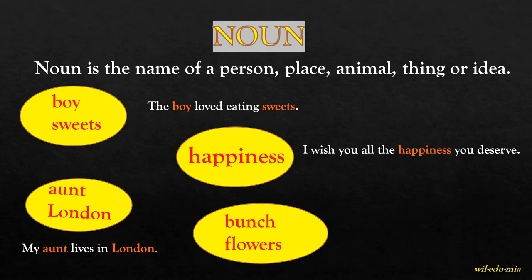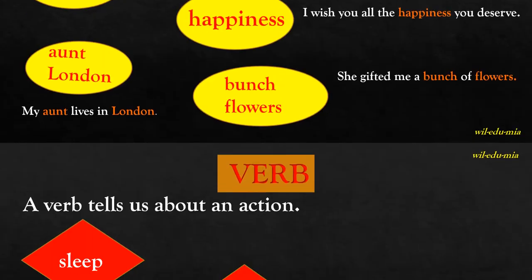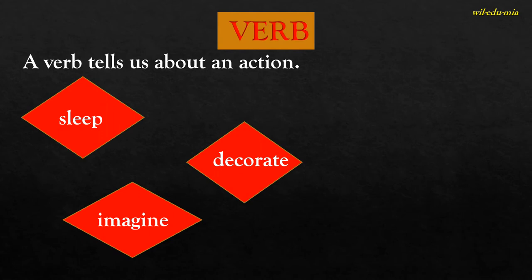In 'My aunt lives in London,' aunt is a common noun and London is a proper noun. In 'She gifted me a bunch of flowers,' bunch is a collective noun and flowers is a common noun.